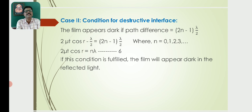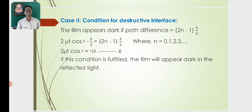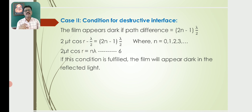Condition for destructive interference: 2μT cos R − λ/2 = (2n − 1)λ/2, where n = 0, 1, 2, 3, etc. This simplifies to 2μT cos R = nλ. This is equation (6). If this condition is fulfilled, the film will appear dark in reflected light.